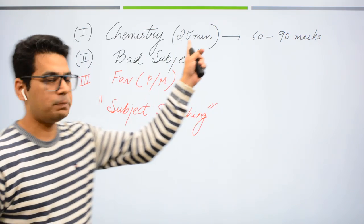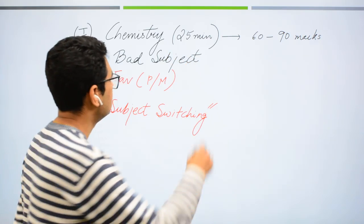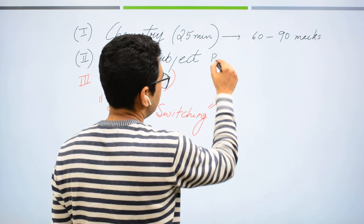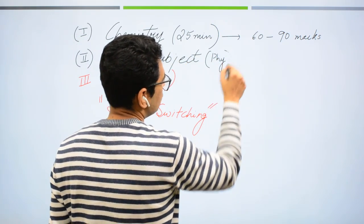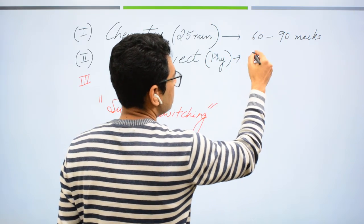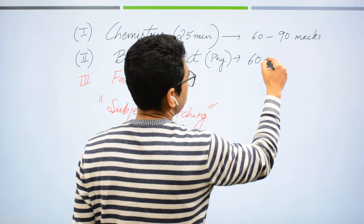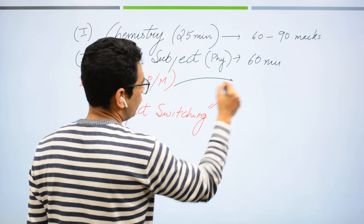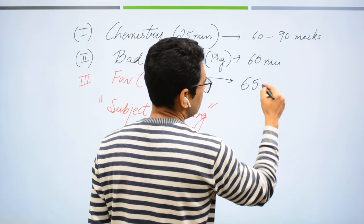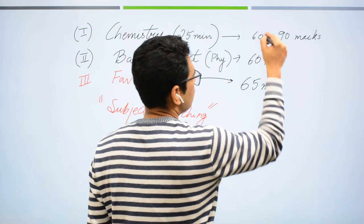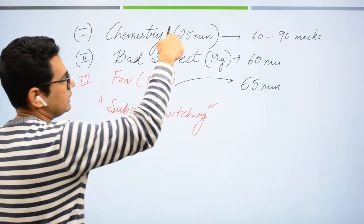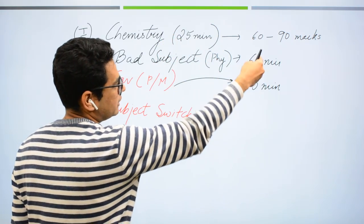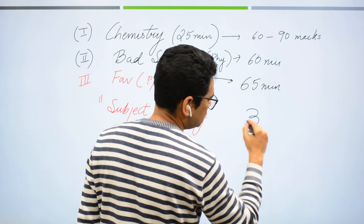Ek baar subject pe lag gaye toh 25 minute isko dene toh 25 minute dene. Phir jo mera maan lijiye, meine yaha par bad, meine aapka kya rakhta physics. Toh mein physics ko yaha par dunga hi dunga 60 minutes mein nahi jaunga aage pehle. 60 minutes yaha dunga, ke dunga, 25 minute dene dunga maths ko 65 minutes dunga. Meine order bata raha, meine 25 minute chemistry ko diye, 65 minutes yaha par diye, 60 minutes yaha diye.